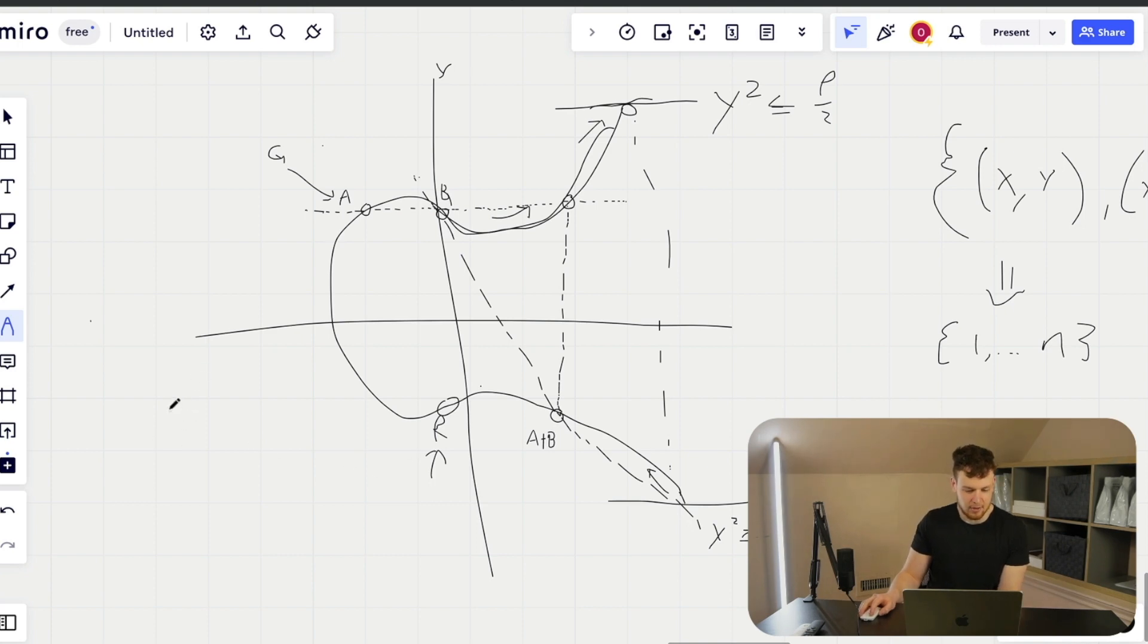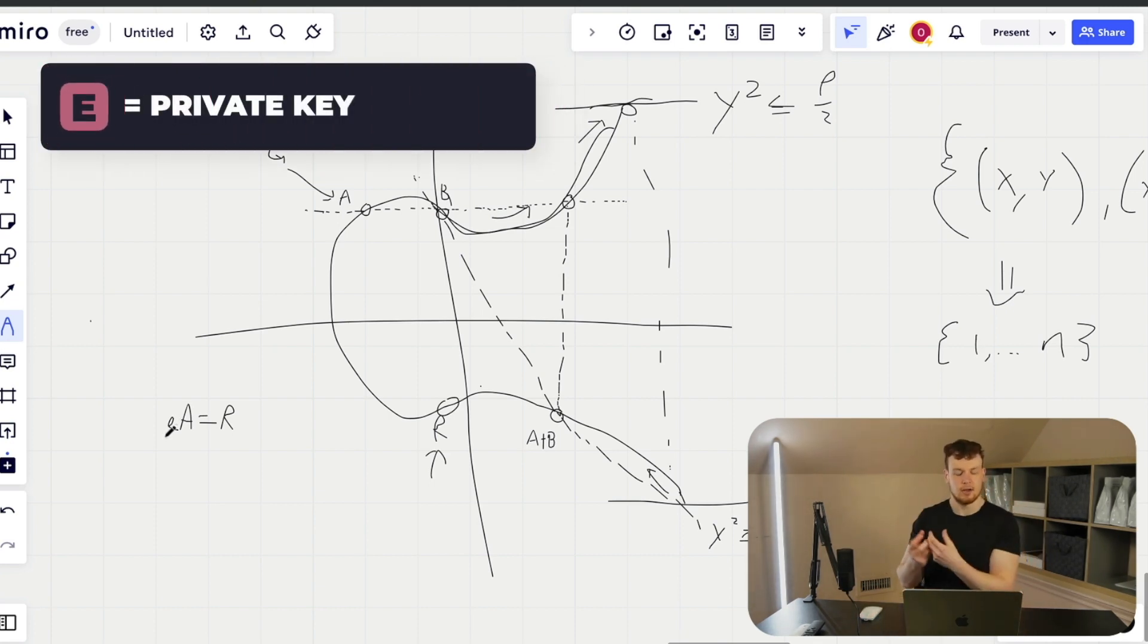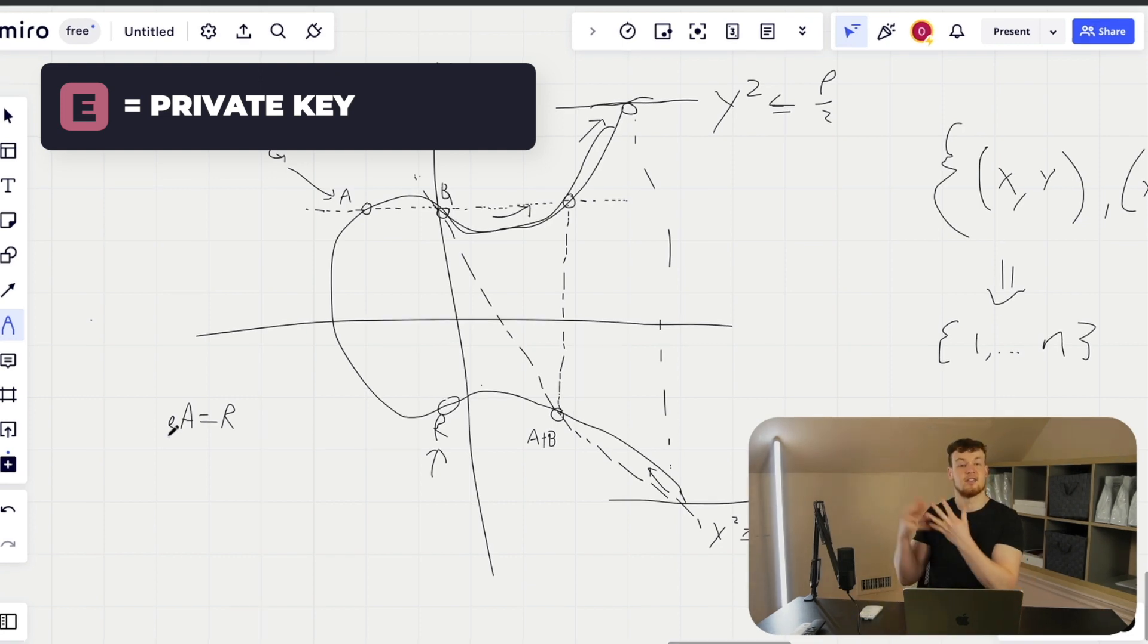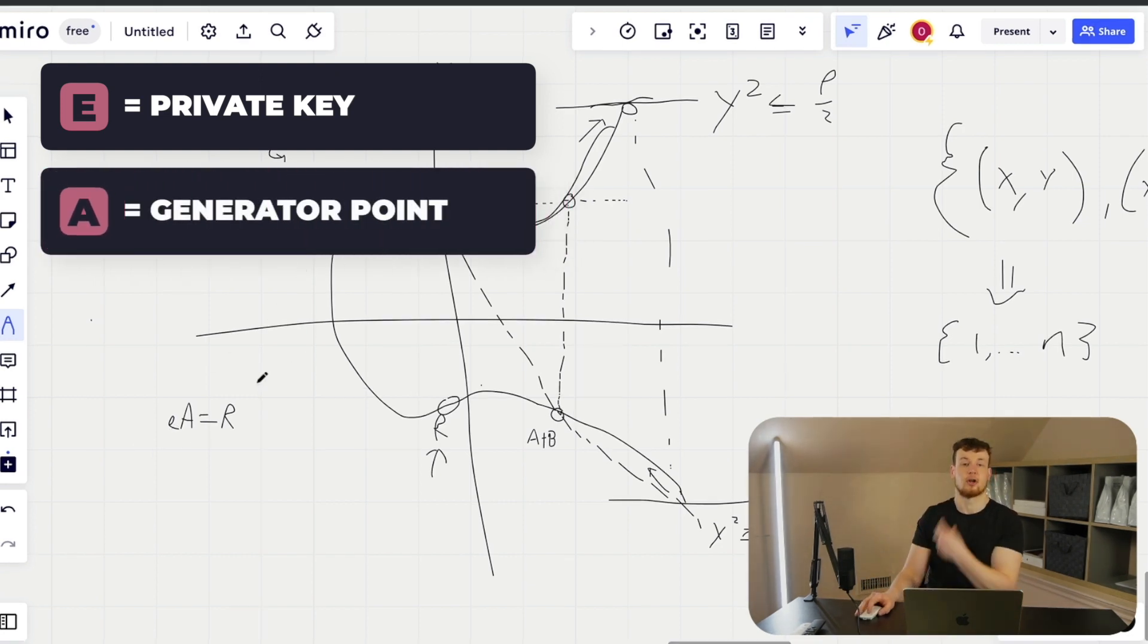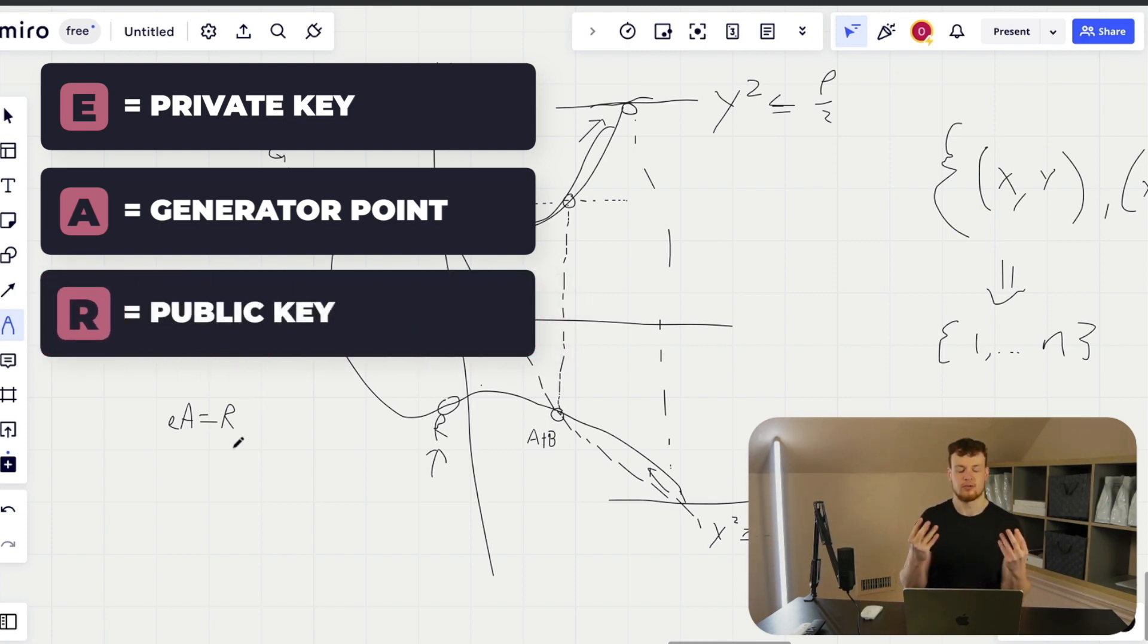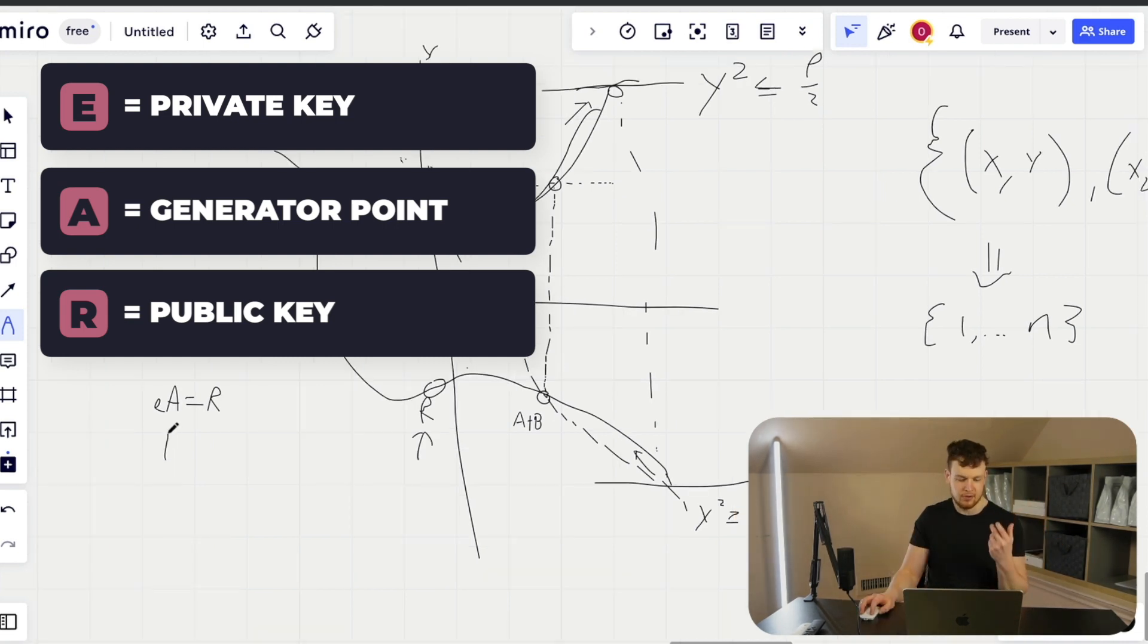So if we just write that out, if I have some small private key e, that's your private key, and then I multiplied it by A, that's going to yield R under elliptic curve multiplication. Because e is actually isomorphic, it can be translated to a point on the elliptic curve because it's less than n. A is also the generator point, just a common point that everybody uses on the elliptic curve. And then R is a resulting point on the elliptic curve because the secp256k1 group is closed under this multiplication that's defined over the whole group.